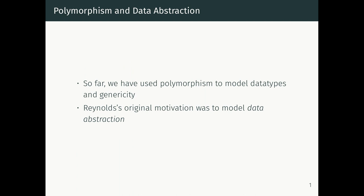Before that, I want to talk again about why polymorphism was invented. So far in the lectures we've used polymorphism for two purposes: to write generic programs that work over many different types of data, and also to model data types using Church encodings — how you can use polymorphic functions to represent things like integers, lists, and booleans. Once you have something like a list, you can also be polymorphic over the contents. But that was not the actual motivation for introducing polymorphism to programming languages.